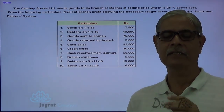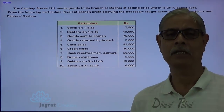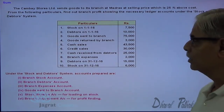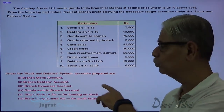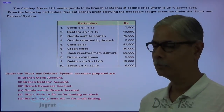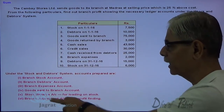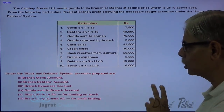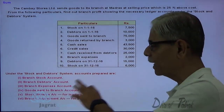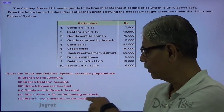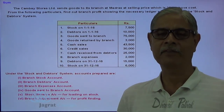First, let us understand what the necessary ledger accounts are that we need to prepare under the stock and debtors system. The accounts prepared for this sum are: Branch Stock Account, Branch Debtors Account, Branch Expense Account, Goods Sent to Branch Account, Stock Reserve for loading on stock, and Branch Adjustment Account. The Branch Adjustment Account is for the purpose of finding out the profit. These are the necessary accounts required to be prepared.